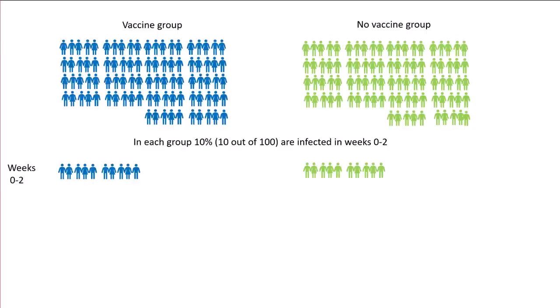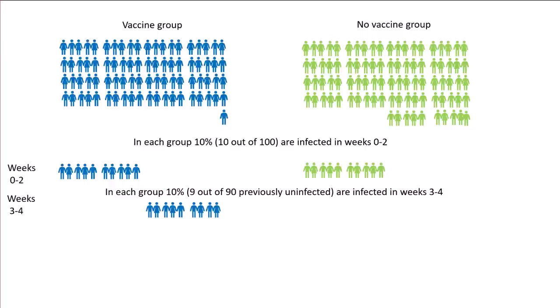In each group, 10% — that's 9 out of the 90 previously uninfected — are going to be infected in weeks three to four. So 9 out of the remaining 90 in the vaccine group are going to get infected, and 9 out of the remaining 90 in the no-vaccine group are going to get infected.